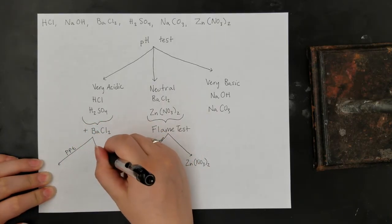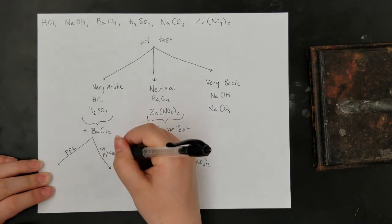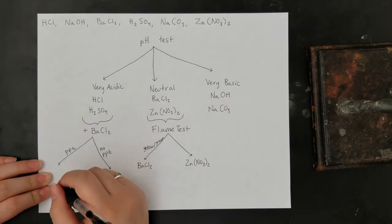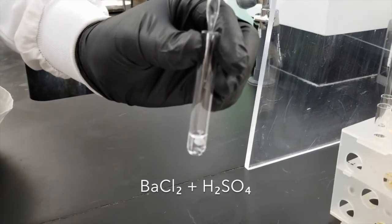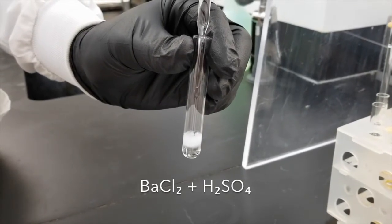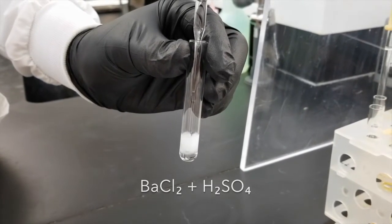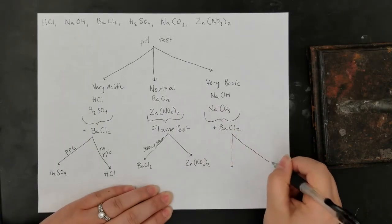But because barium sulfate is insoluble, if we react it with sulfuric acid, it'll make a precipitate. This will allow us to distinguish between our two acidic solutions.